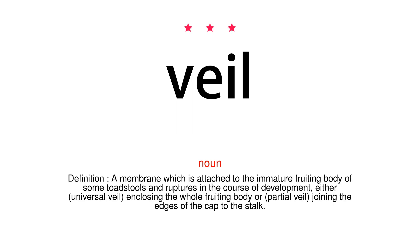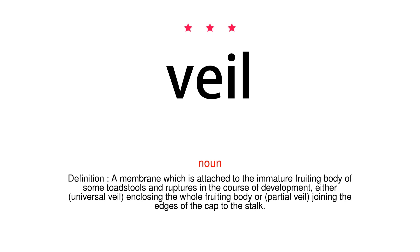Noun. Definition: A membrane which is attached to the immature fruiting body of some toadstools and ruptures in the course of development. Either universal veil, enclosing the whole fruiting body, or partial veil, joining the edges of the cap to the stalk.